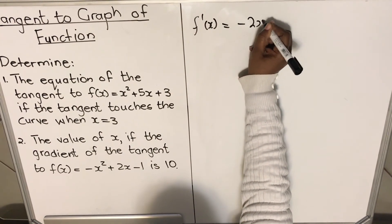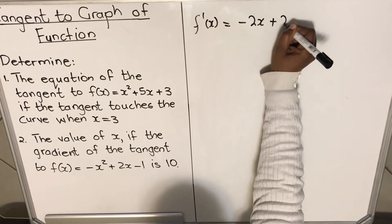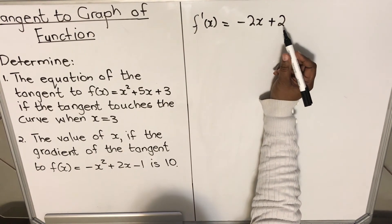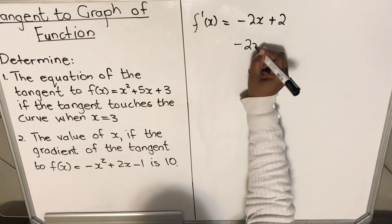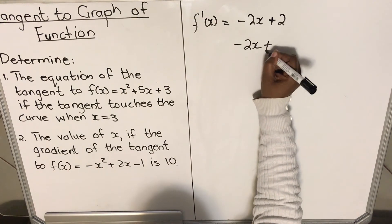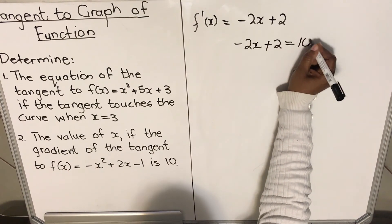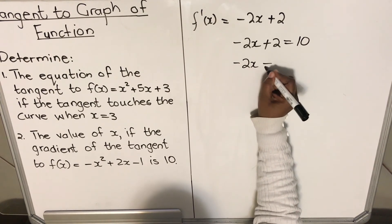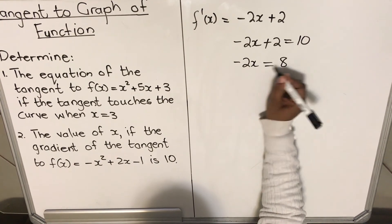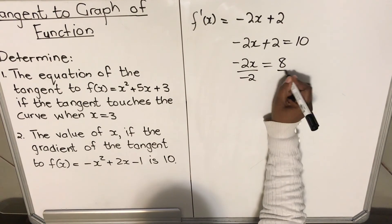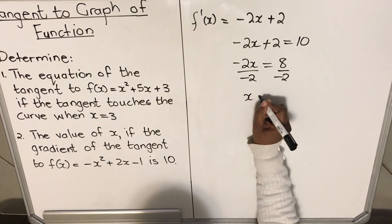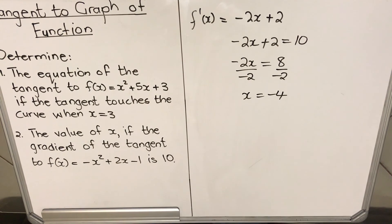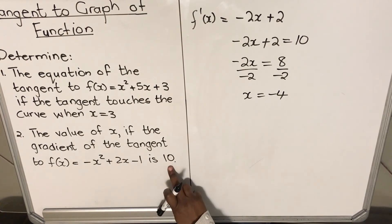First, find the derivative: f'(x) = -2x plus 2. Then equate this derivative to 10, since your gradient equals 10: -2x plus 2 = 10. Solving: -2x = 8, divide both sides by -2, and x = -4. So x = -4 is the value where the gradient is 10.